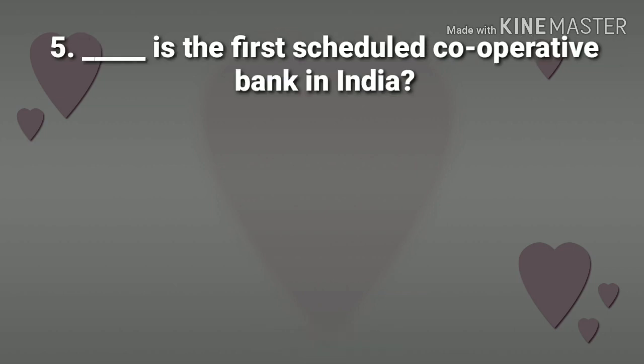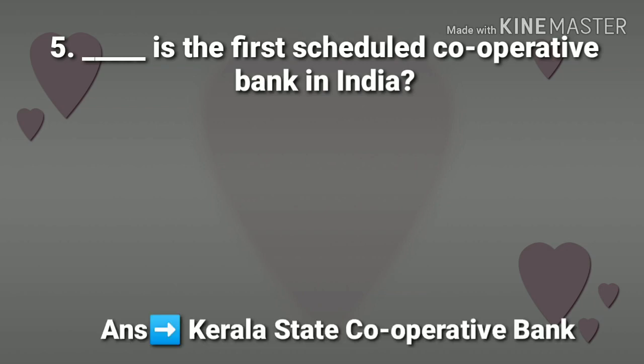5th question: Which is the 1st scheduled cooperative bank in India? Answer: Kerala State Cooperative Bank.